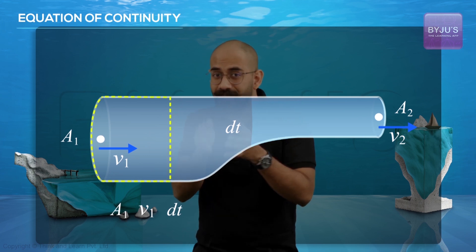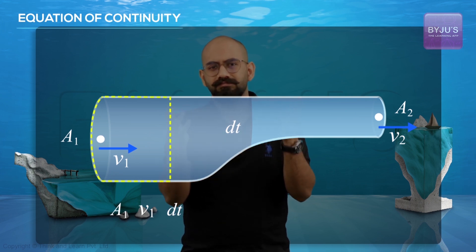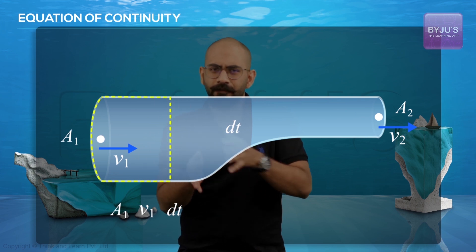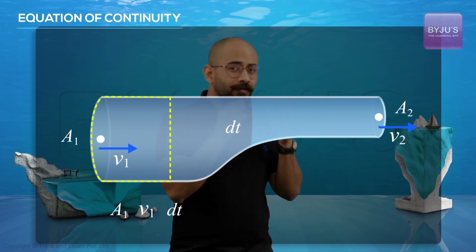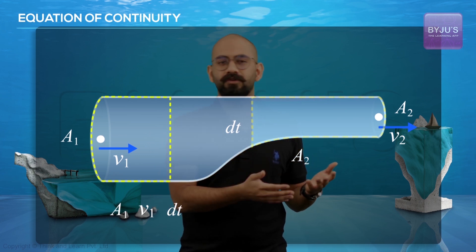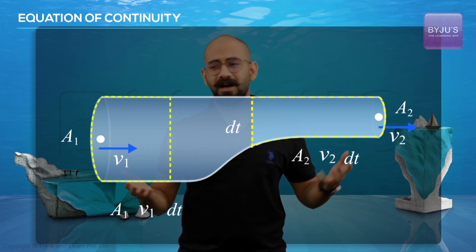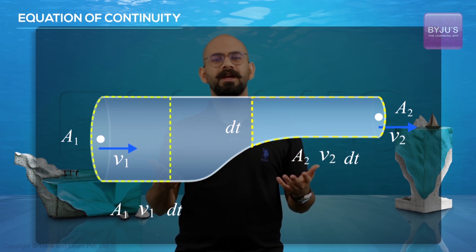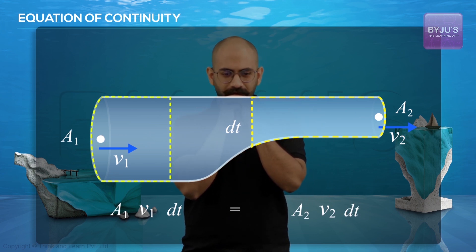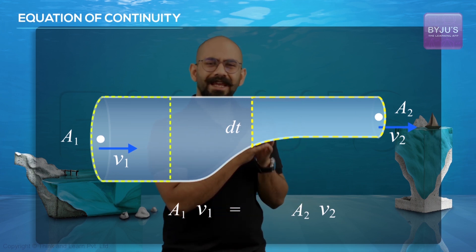So because dt is extremely small, we can assume that the area doesn't change within that small distance. So the volume would be A1 V1 dt. As we come to the other side, the volume gained will be again A2 into this distance which is A2 into V2 into dt. So by conservation of mass, we know that the volume will be the same, so therefore A1 V1 dt should be equal to A2 V2 dt. That means if I cancel out dt on both sides, I get A1 V1 equals A2 V2.